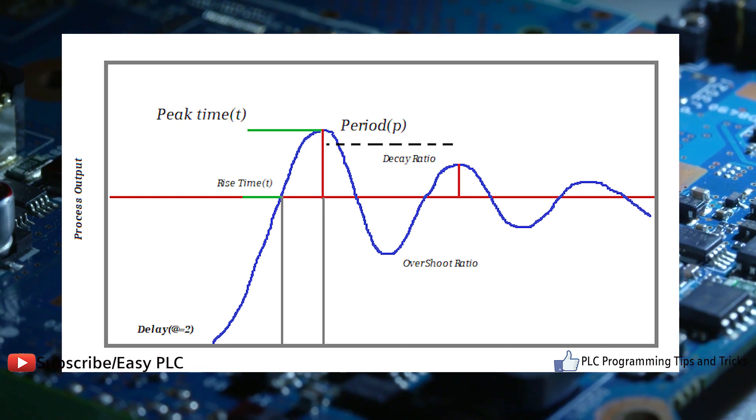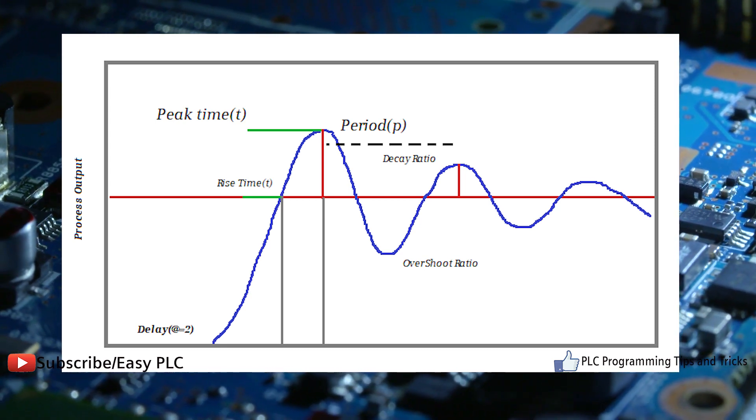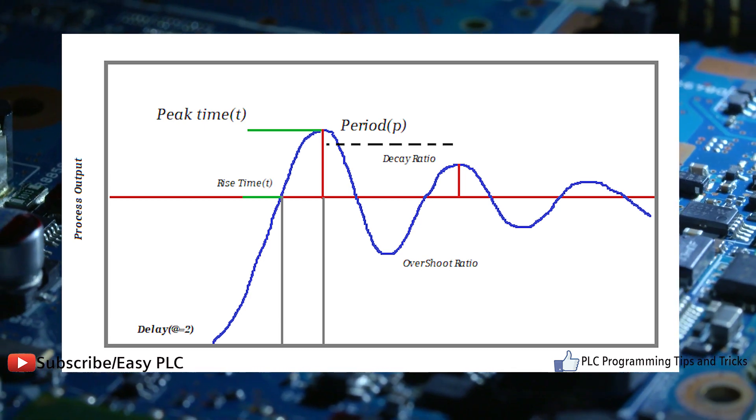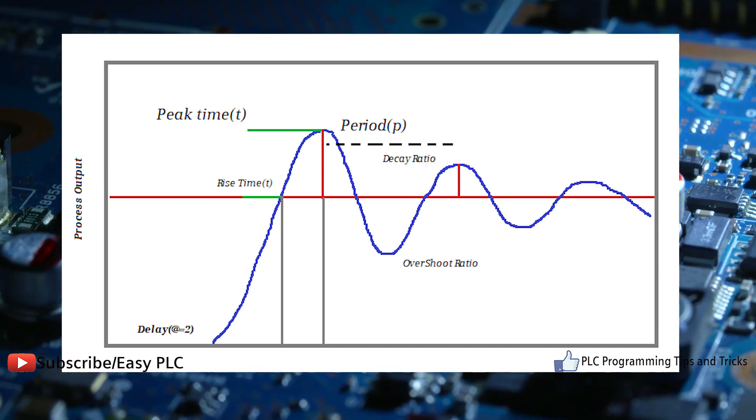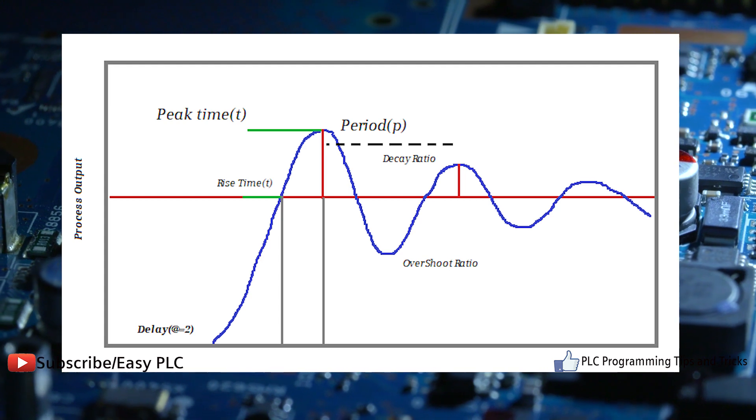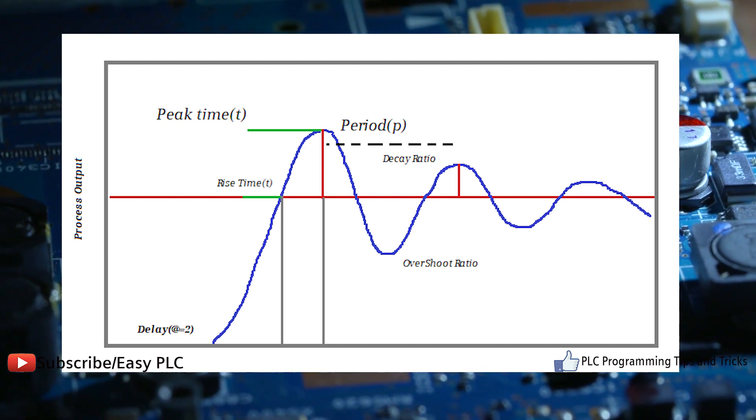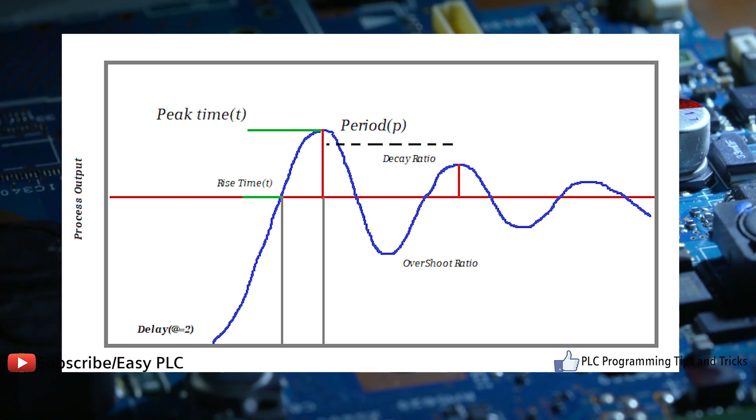This is because it never reaches the steady state condition. It provides stable operation but always maintains the steady state error. Speed of the response is increased when the proportional constant Kc increases.